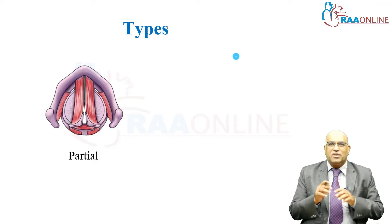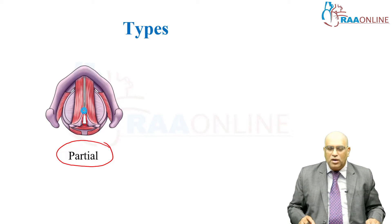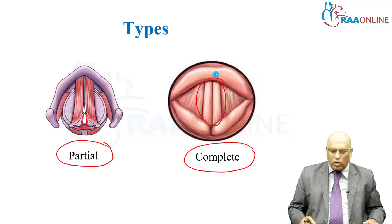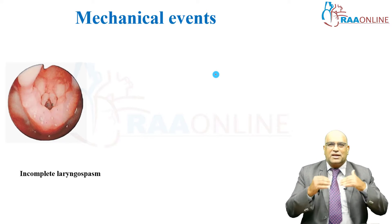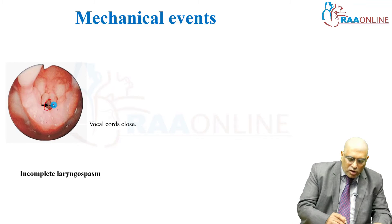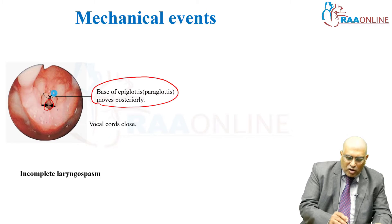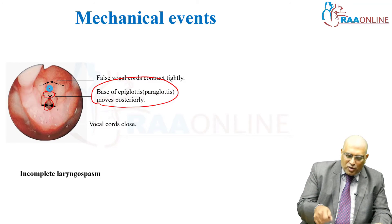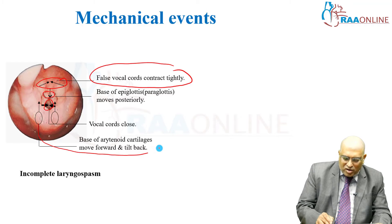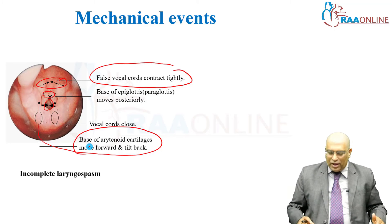Coming to the types of laryngospasm: it can be partial, where the posterior aspect is slightly open, or it can be complete, with total closure of both the false and true vocal cords. In incomplete or partial laryngospasm, the true vocal cords leave a small opening at the posterior part. The base of the epiglottis moves posteriorly, the false vocal cord contracts tightly, and the base of the arytenoid cartilage moves forward and tilts backward.